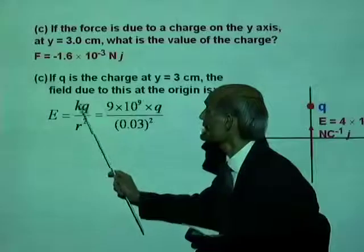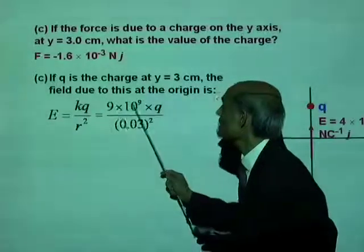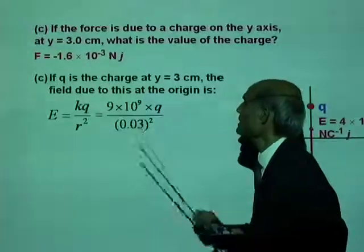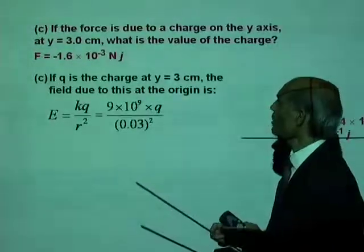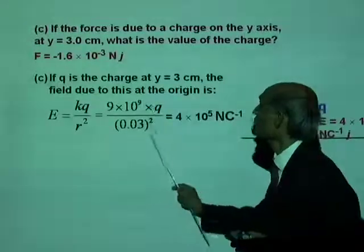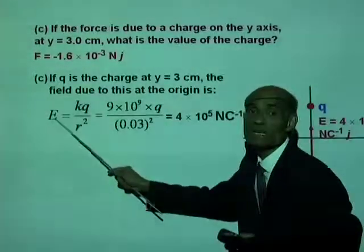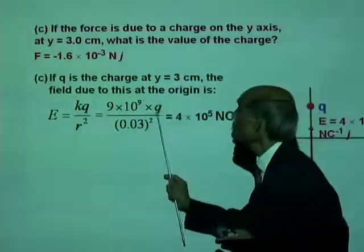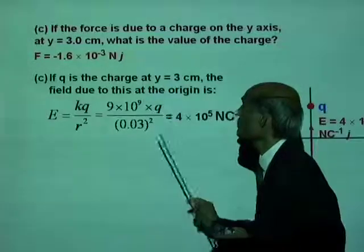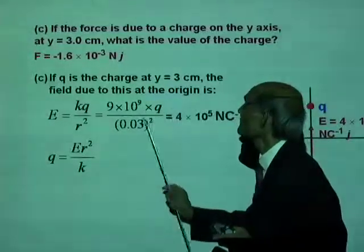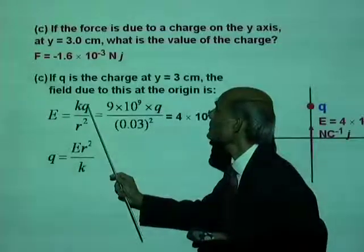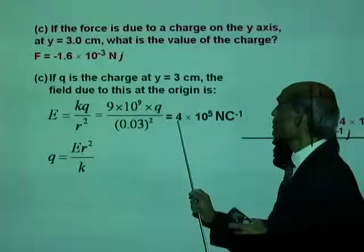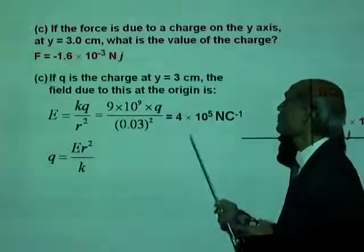Let's put the values in. k is 9×10⁹ times Q divided by r squared, which is 0.03 all squared, and this quantity equals E which is 4×10⁵ Newton per coulomb. Now you can solve for Q. Q equals E times r squared divided by k. This is the E value — the electric field at the origin.